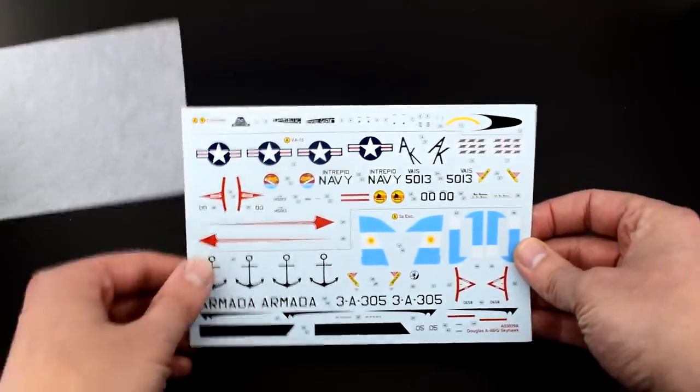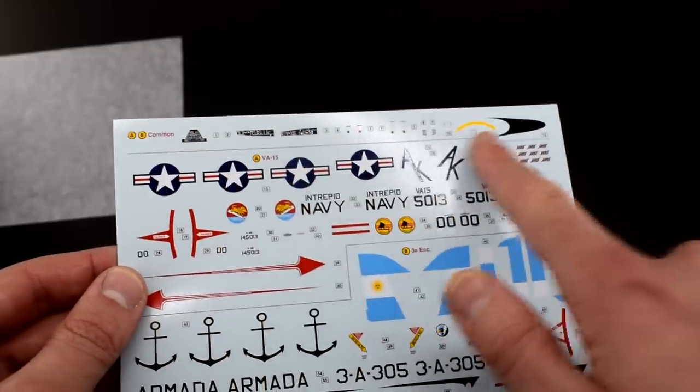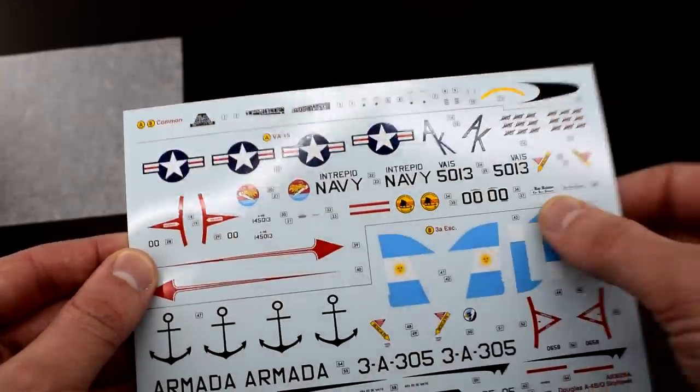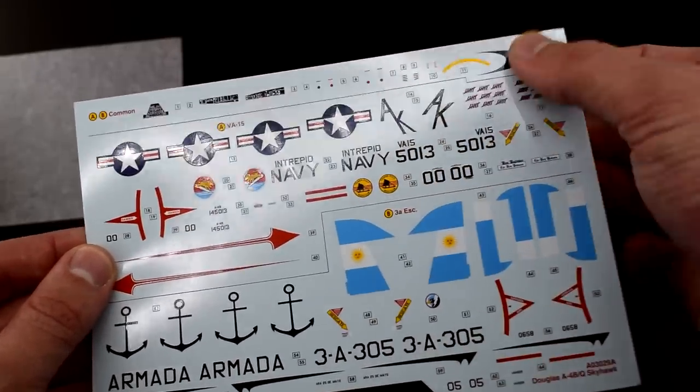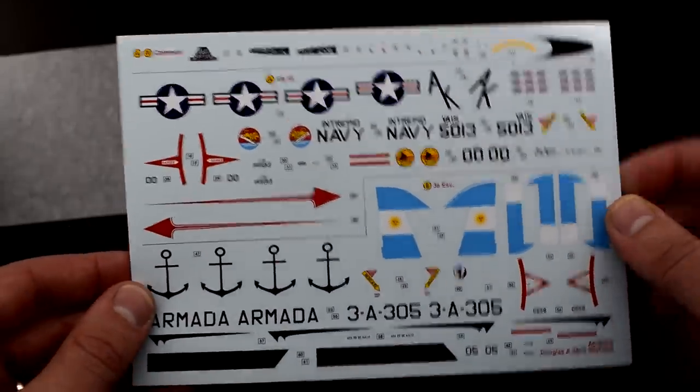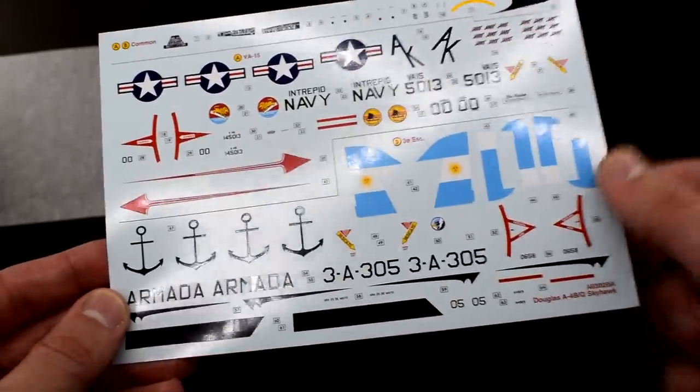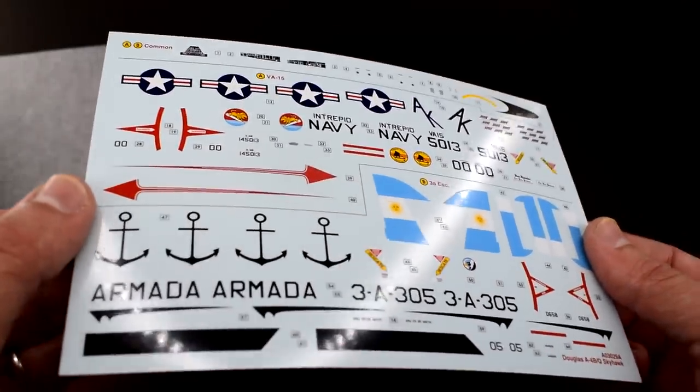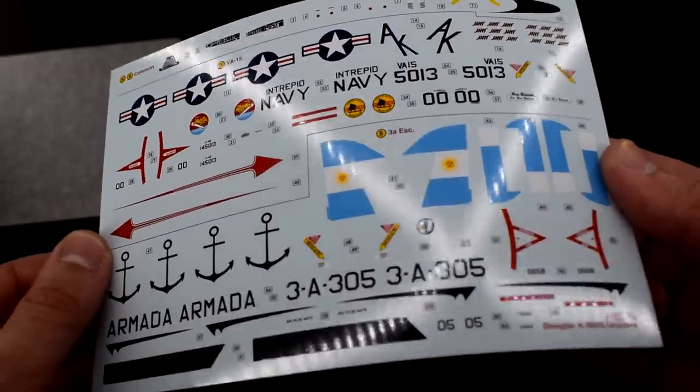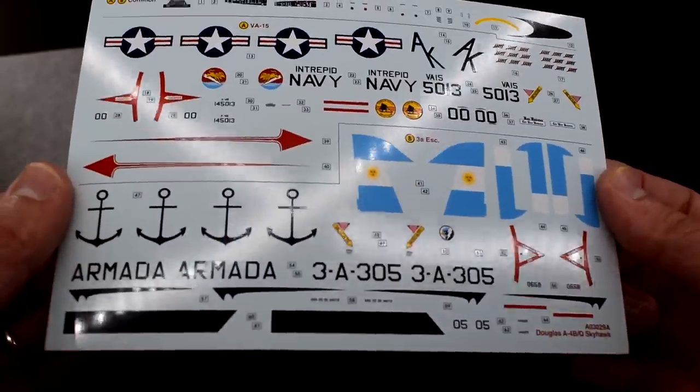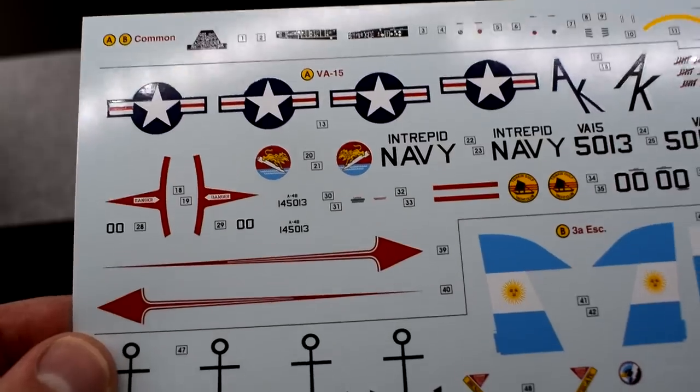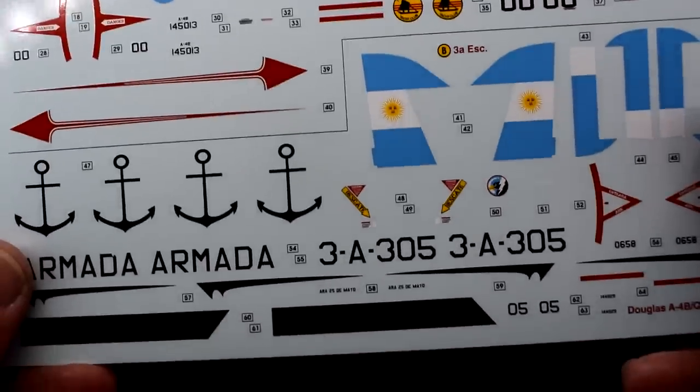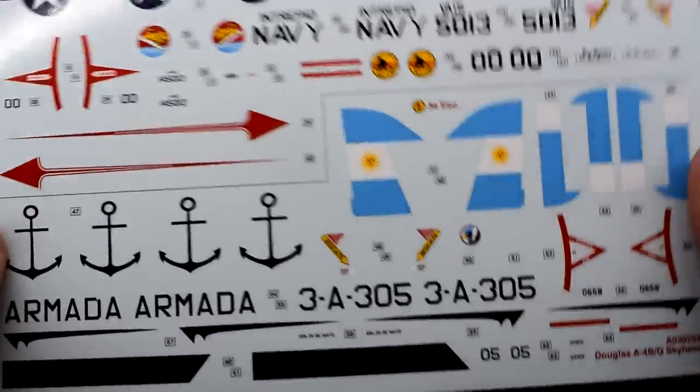Up next is the decals and we've got quite a big sheet. At the top here we've got our common ones which can be used on either paint schemes. They look like control panels and various other indicators. Then next step down we've got the American version and the Argentinian version. The decals are printed to the normal standard from Cartograph which means they're going to be absolutely fantastic. We can't see any registry errors or misprints or tears. It's a very nice looking sheet of transfers and even some of the small wording is legible.